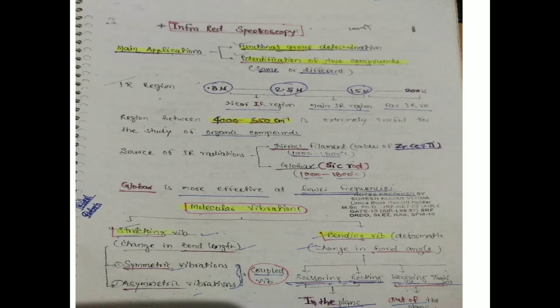The region of IR spectroscopy is 0.8 micron to 200 micron. In this region, three types are found: first is 0.8 to 2.5 micron, called the near IR region; the middle region is 2.5 micron to 15 micron, called the main IR region; and 15 to 200 micron is the far IR region. The region between 4000 to 650 wavenumber (cm⁻¹) is extremely useful for the study of organic compounds.